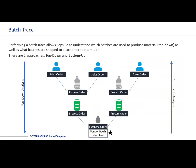Next we'll come on to is the batch trace. Performing a batch trace allows PepsiCo to understand which batches are used to produce material in a top-down analysis, as well as what batches are shipped to a customer in a bottom-up analysis. There are two approaches — top-down and bottom-up. Looking at the top-down analysis, we can see the sales orders of the product that went to the customer, linked to the process orders of that particular product when it was manufactured with the intelligent batch, then linked to the process orders of the materials consumed to make that process order. The final part of the top-down analysis links back to the vendor batch management — the procurement of raw materials from the vendor and their batches.